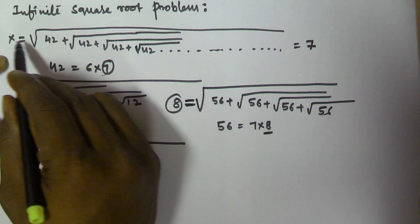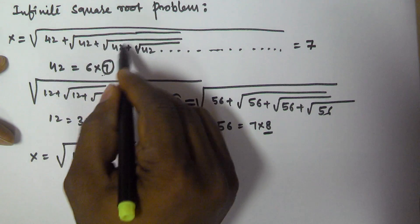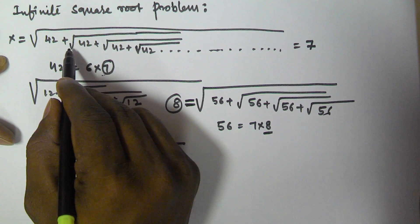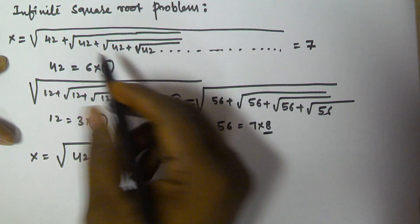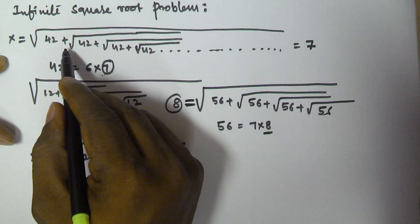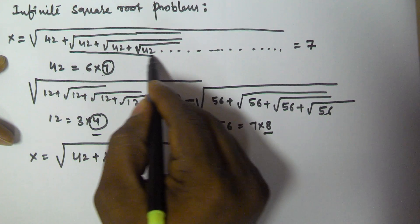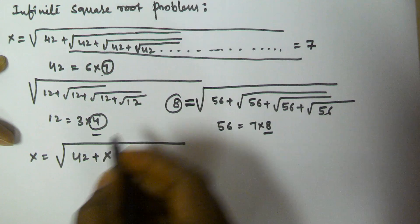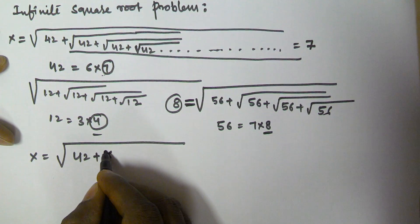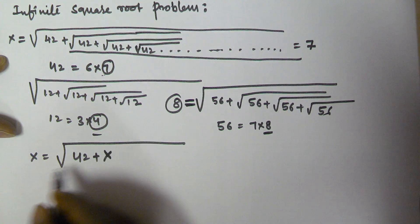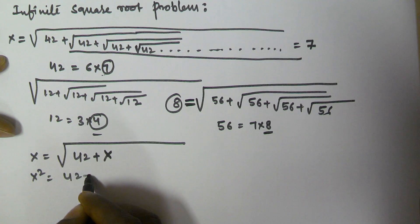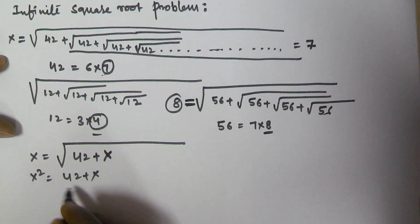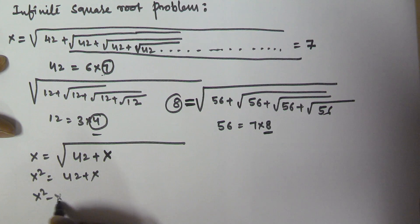Obviously, if the whole expression equals x, then the remaining infinite part also equals x. That is why we replace that part with x, giving us under root of 42 plus x. Squaring both sides, x squared is equal to 42 plus x.